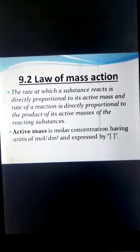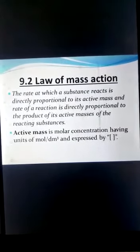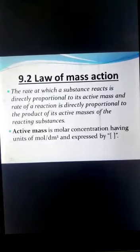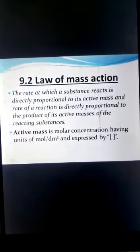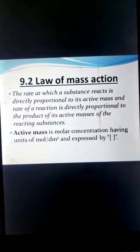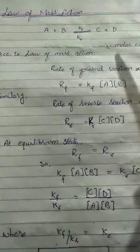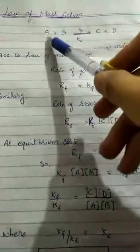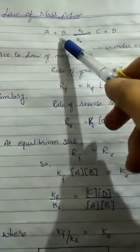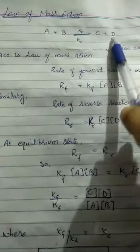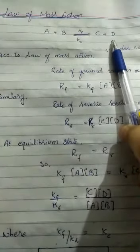Active mass is the molar concentration of substances; its unit is mole per dm³ and it is expressed using square brackets. To understand the Law of Mass Action, we derive it. Consider a reaction where A and B are reactants forming products C and D.